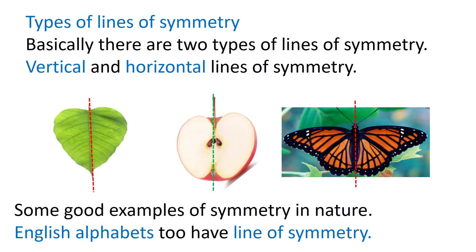Let us now see the types of lines of symmetry. Children, basically there are two types of lines of symmetry: vertical and horizontal lines of symmetry. Here you can see a picture of a leaf, half an apple and a butterfly, which are good examples of symmetry in nature. English alphabets do have a line of symmetry.